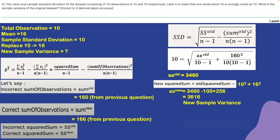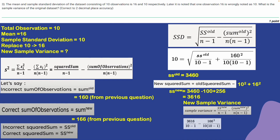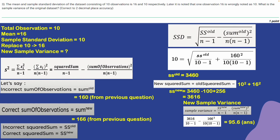New sample variance equals ss_new divided by n minus 1, minus sum_new squared divided by n times n minus 1. So 3616 divided by 9 minus 166 squared divided by 90, and we get 95.6 as the answer. Thanks a lot.